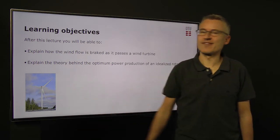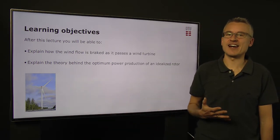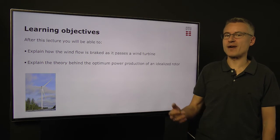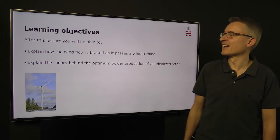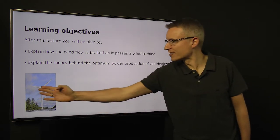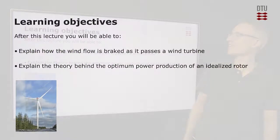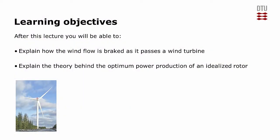A wind turbine is a device which is made to extract energy out from the wind. It does so by taking out the kinetic energy, and therefore the wind loses velocity as it passes through the turbine. After this lecture, you will be able to explain how the flow is braked by the turbine, and explain also the theory behind the optimum power production of an idealized rotor.